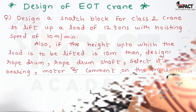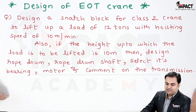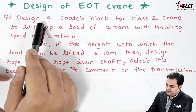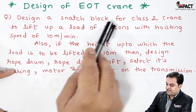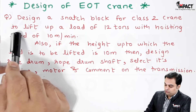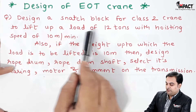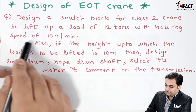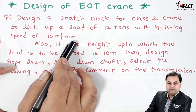Hi friends, in this video I will be explaining the design of an EOT crane. The question given is: design a snatch block for a class 2 crane to lift a load of 12 tons with a hoisting speed of 10 meters per minute.